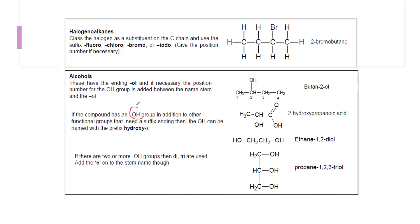If a compound has an OH group in addition to a carboxylic acid, the carboxylic acid takes priority. The OH is treated as a branch using the prefix 'hydroxy'. Numbering from the carboxylic acid carbon: carbon 1 is the acid carbon, carbon 2 has the OH, and there are three carbons total. The name is 2-hydroxypropanoic acid — prop for three carbons, and '-anoic acid' for the carboxylic group.